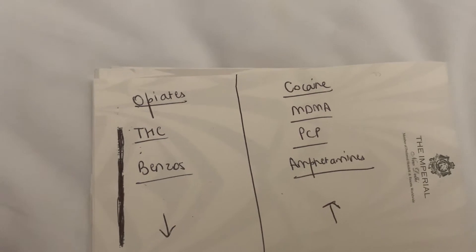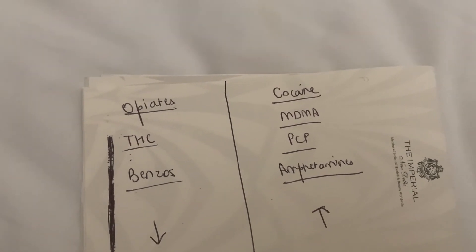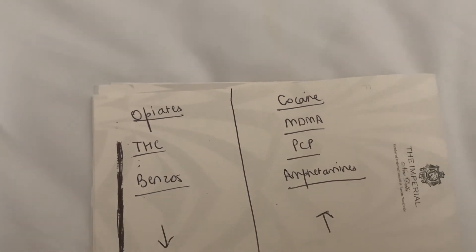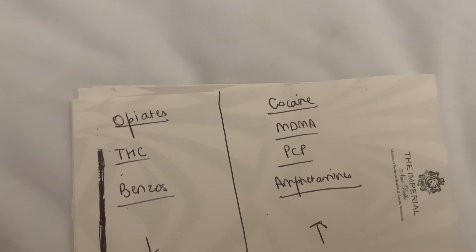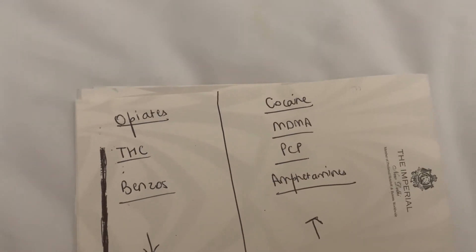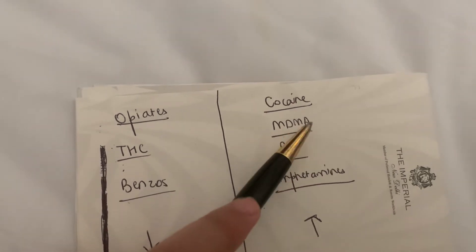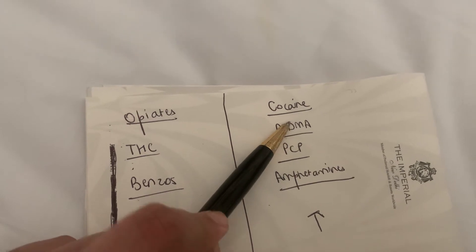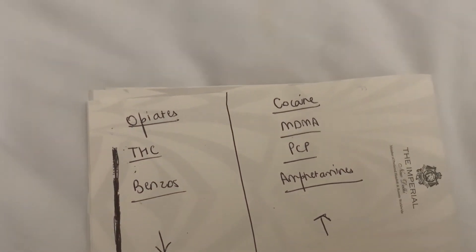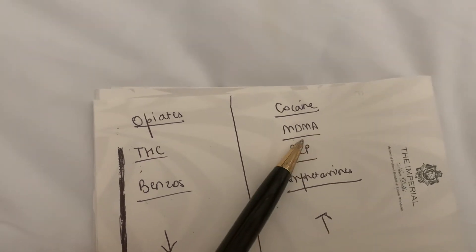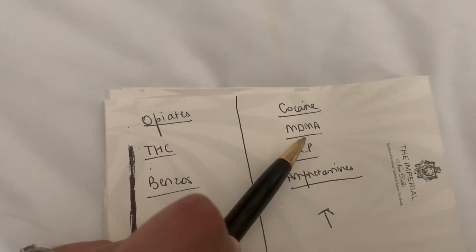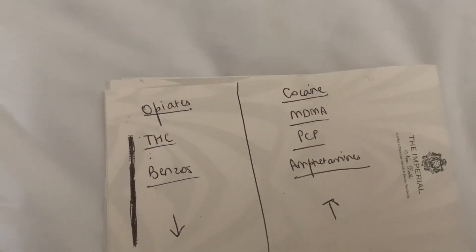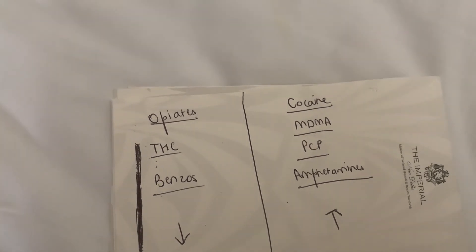MDMA also causes pupillary dilation, psychosis, and tachycardia, but there are two things specific to MDMA that cocaine does not have: overheating and water intoxication. To remember these — the M in MDMA reversed is a W, so that's water intoxication. And the M in MDMA stands for Mordor from Lord of the Rings, which is a really hot place, so that's how you remember overheating.